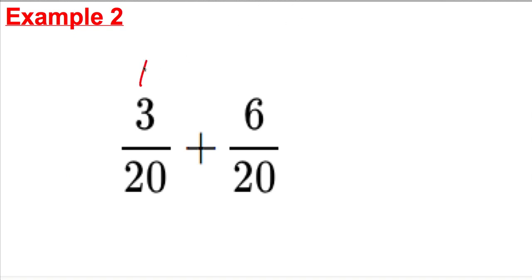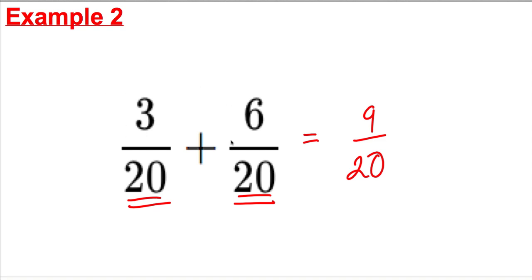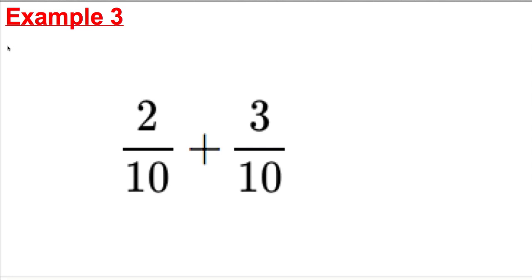Next example: this means 3 twentieths, 3 twentieths, 3 twentieths, and this here means 6 twentieths. How many twentieths do we have? We have 9 twentieths. The numbers on the bottom are the same, so we can just add the top numbers. Do copy that example in your book.